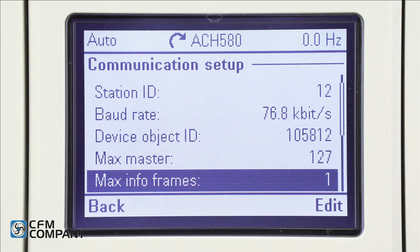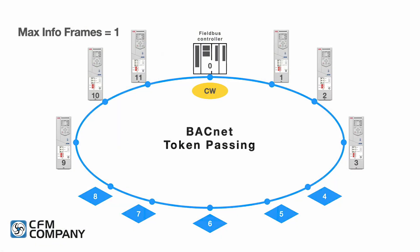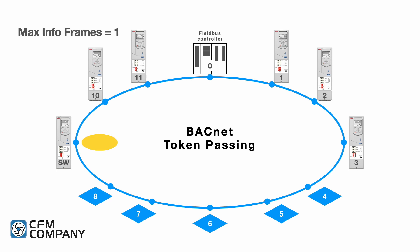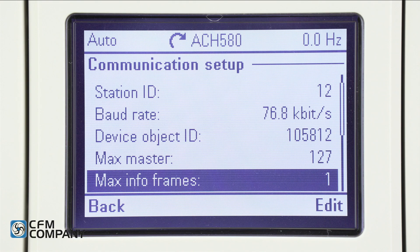Next is max info frames. Press the question mark button. This is the maximum number of information frames the device may transmit before it must pass the token. Press exit. This device is restricted to only transmitting one piece of information before it must pass the token to the next address on the network. If every device on the network is programmed to pass only one piece of information at a time, the token can be passed along rapidly — it is this efficiency that can make it possible to transmit large amounts of data fast on the network. Leave the max info frames at the default value of 1.